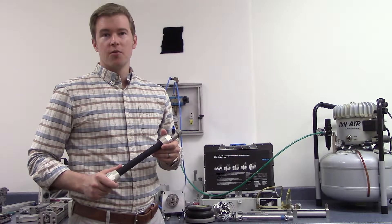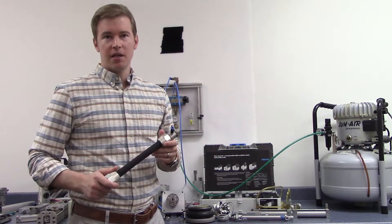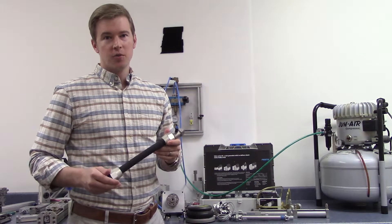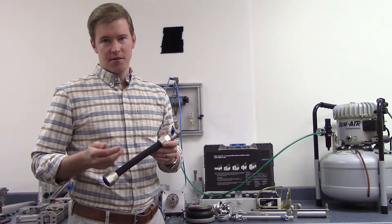Another type of flexible actuator is the fluidic muscle. In contrast to the bellows actuator, which expands when inflated, the fluidic muscle is designed to contract when inflated.